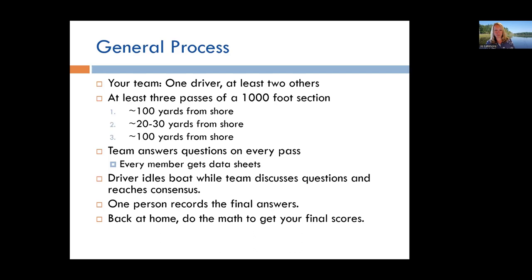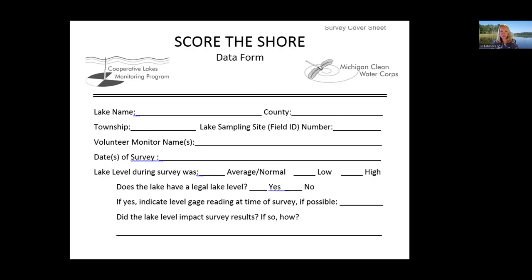The survey cover sheet — you only need one copy. It's where you record the lake name, county, township, names of all participating volunteers, and the dates you were out. You'll also note lake level: was it average, low, or high? Does your lake have a legal lake level? If so, record the gauge reading. Note whether lake level impacted survey results. If the water was very high, for example, you might not be able to see the edge of the normal shoreline.